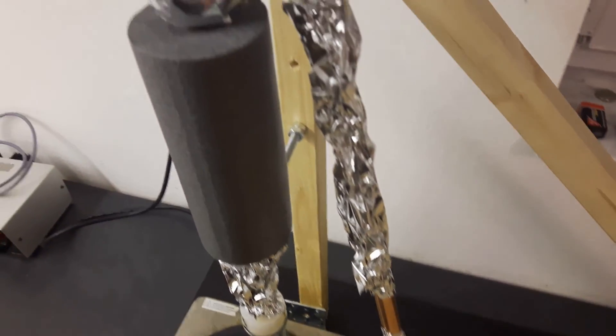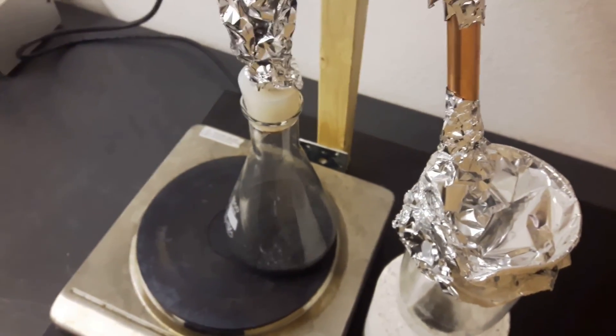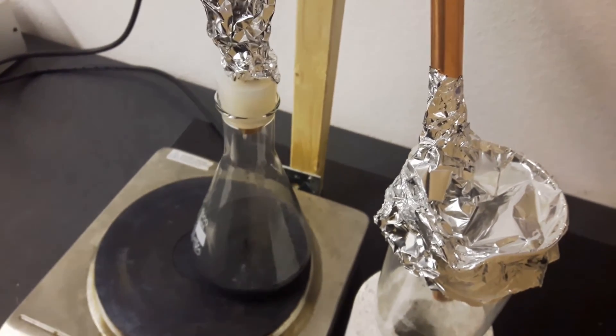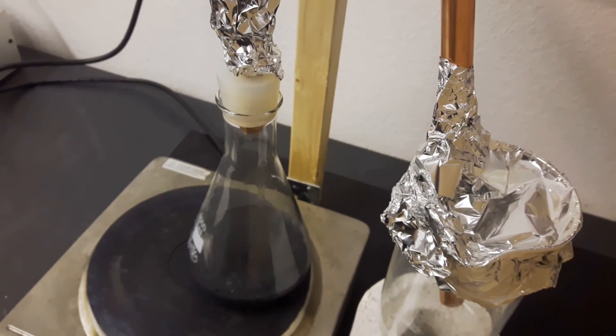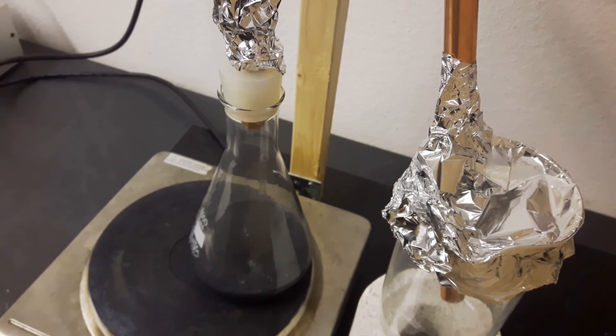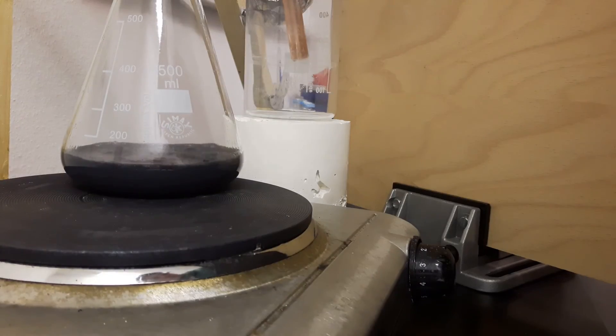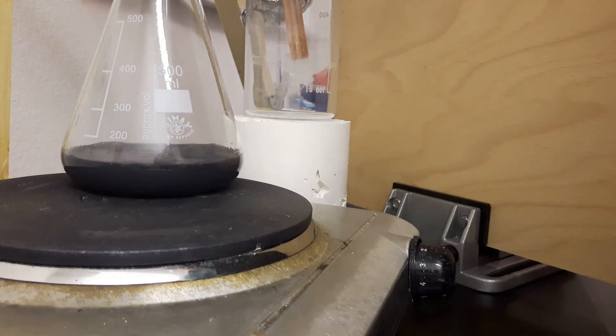So here you see my distillation setup. I've put a thermometer in top. And you see that it's room temperature. So there is not any vapor that has made it up yet. And you see most of the vapor that is going upwards is just dripping down. But soon this will heat up. And here you can see the first isopropanol that is coming over.